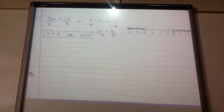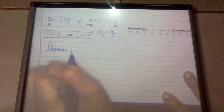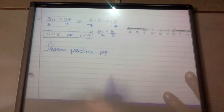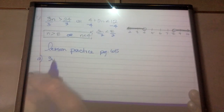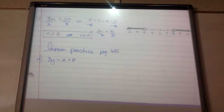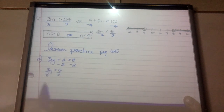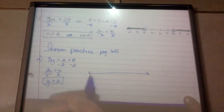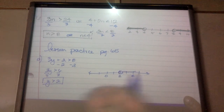Let's jump into lesson practice on page 65, starting with part A. Part A asks us to solve and graph: 3y plus 2 is greater than 8. I'm going to subtract 2, so 3y is greater than 6. Divide by 3, and y is greater than 2. I'll circle my answer and graph it — open circle at 2, with the line pointing to the right because y is greater than 2.